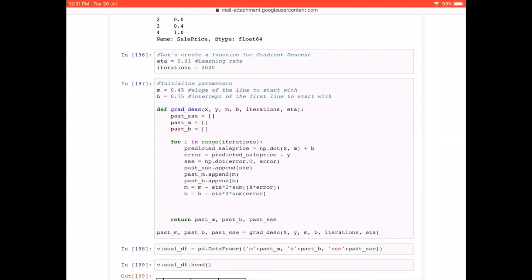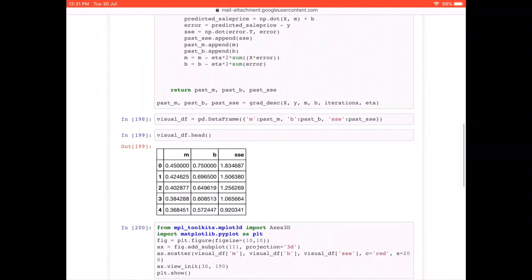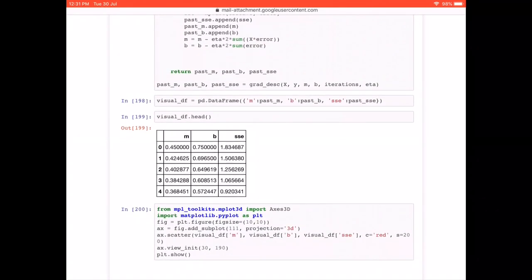Now, in order to visualize these three things, m, b and how ssc changes with m and b, what we are doing is we are just storing all these three lists into a data frame. And we have given the name as visual_df. This is just to make our life a bit more easy, so that we can plot it properly. And so that our code of plotting this 3D graph remains simple. So that is why you can see m, b and ssc in the line number 199.